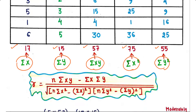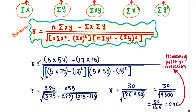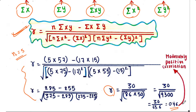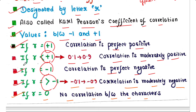We have a formula to calculate correlation, and we now put the values into it. Here n equals five because we took values from five trees. After the calculation, the result is r equals 0.46, which means the correlation is moderately positive, because when r is less than one but greater than zero, it is moderately positive.